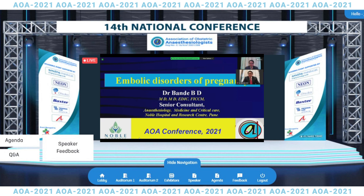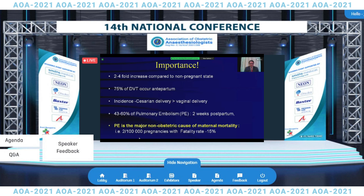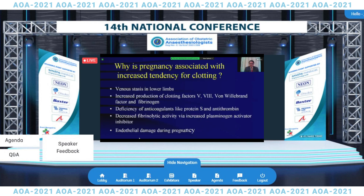I thank the organizers for giving me the opportunity to speak on embolic disorders of pregnancy. We will focus mostly on thromboembolism and at the end also speak about amniotic fluid embolism. It's important because there is a four-fold increase in the incidence of thromboembolic events in pregnancy compared to non-pregnant status. 75% of DVTs occur in the antepartum period, and there is an increased incidence related to cesarean delivery. 60% of pulmonary embolisms can occur in the two weeks of the postpartum period, and pulmonary embolism is the major non-obstetric cause of maternal mortality, with a fatality rate of 15%.